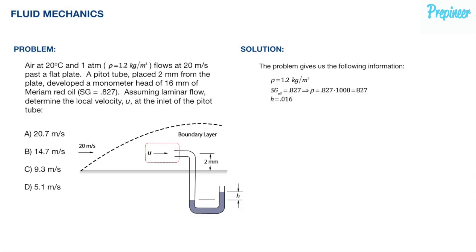This problem gives us the following information: the density of the air is 1.2 kilograms per meter cubed. The specific gravity of the oil is 0.827. With this, we can determine the density of the oil by multiplying by the density of water: 0.827 times 1000 equals 827 kilograms per meter cubed. We also know the manometer head is 16 millimeters, which we convert to meters: 0.016 meters.